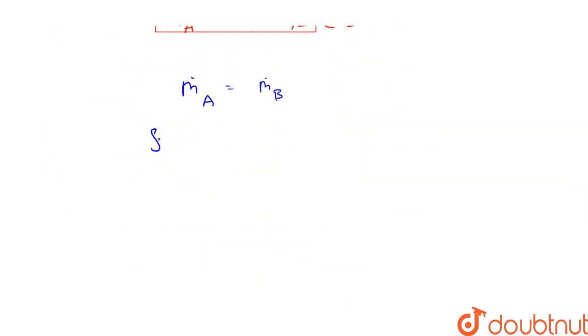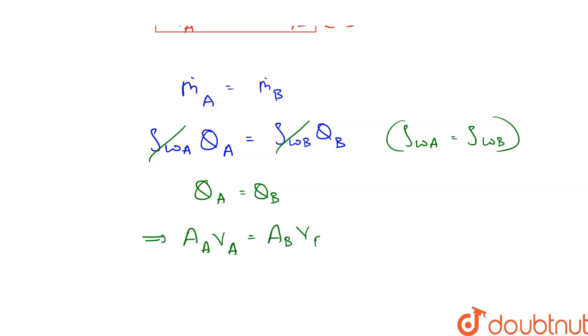So mass flow rate can be written as density of water at A into volume flow rate at A, which is equal to density of water at B into volume flow rate at B. Since water is incompressible, Rho WA is equal to Rho WB, so they can be divided. So we are left with QA is equal to QB, or AA into VA is equal to AB into VB.